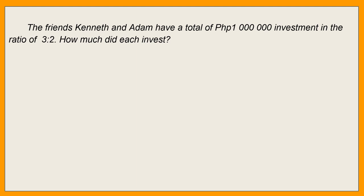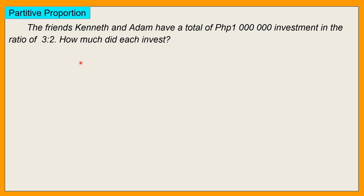The French Kenneth and Adam have a total of 1 million pesos investment in the ratio of 3 is to 2. How much did each invest? So ibig sabihin, sa investment nilang 1 million, tatlong part ang para kay Kenneth, two parts ang para kay Adam — mas malaki ang investment ni Kenneth compared kay Adam. Since nandito yung total investment at hahatiin into 3 and 2 parts, this is a partitive proportion.